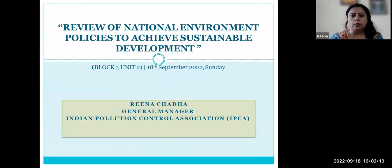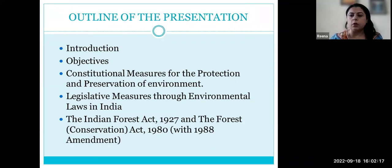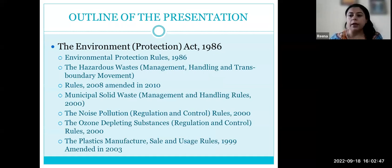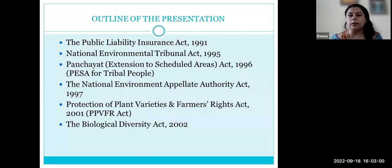The objectives and outline of today's presentation: constitutional measures for the protection and preservation of environment will be discussed; then legislative measures through environmental laws in India — the Indian Forest Act 1927, the Forest Conservation Act 1980, the Water Prevention and Control of Pollution Act, Water Prevention and Control of Pollution Cess Act, Air Prevention and Control of Pollution Act, Environment Protection Act 1986 (an umbrella act), and the Public Liability Insurance Act covering compensation to affected persons.